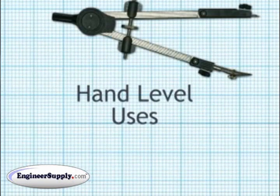Hand levels are simple devices, optical devices with a bubble to allow you to measure difference in elevations. Very simple to use.